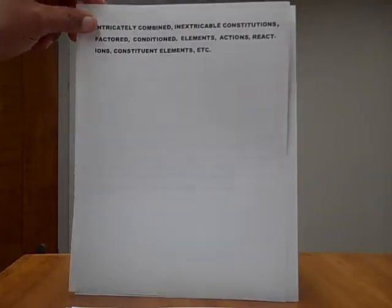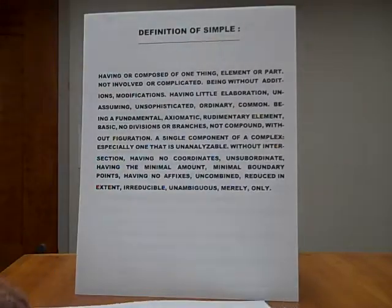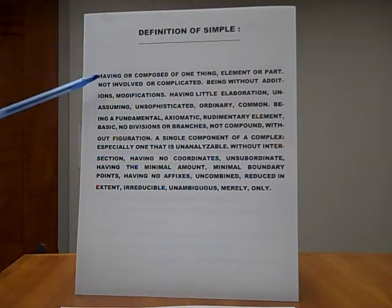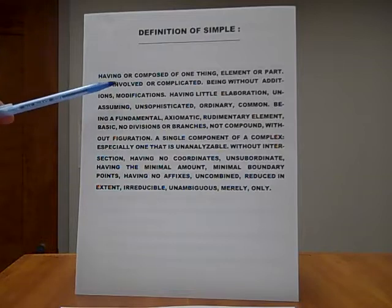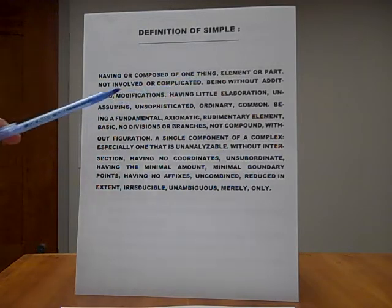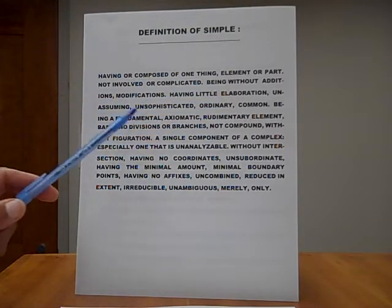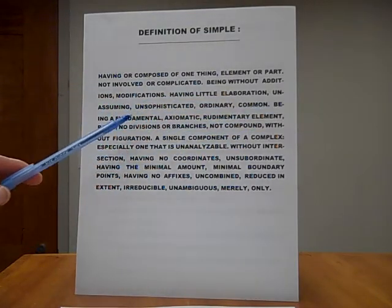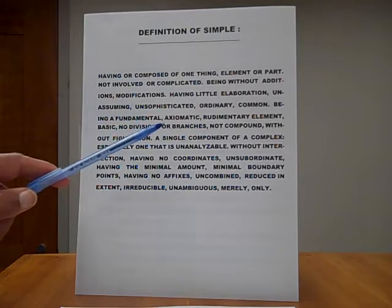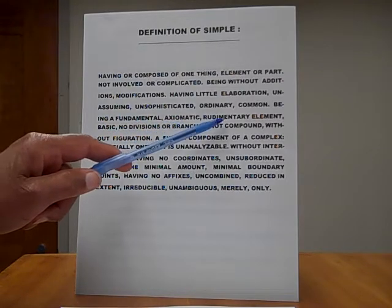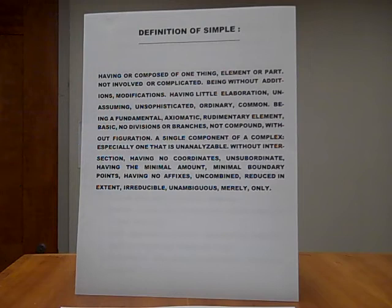Now we will go to the definition of simple. Definition of simple. Having or composed of one thing, element or part, not involved or complicated, being without addition, modification, having little elaboration, unassuming, unsophisticated, ordinary or common, being a fundamental, an axiomatic, a rudimentary element, basic, no divisions or branches, not compound.